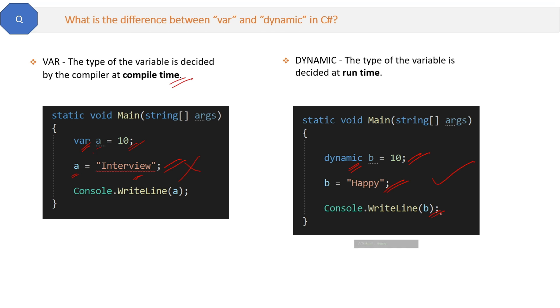you will get b's value as 'happy' as the output. Because in case of dynamic, the type of the variable is decided at runtime. So when you run the application, the last value will be accepted as the final type and value of the variable.